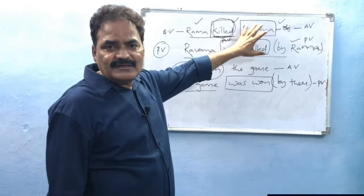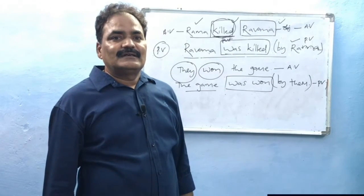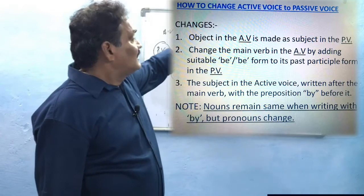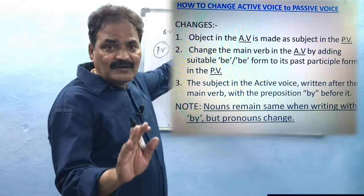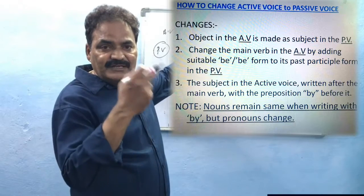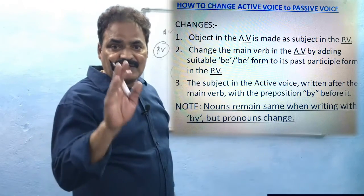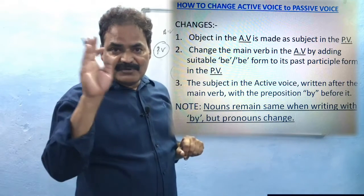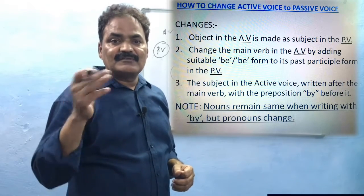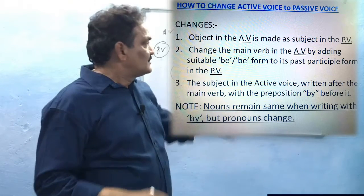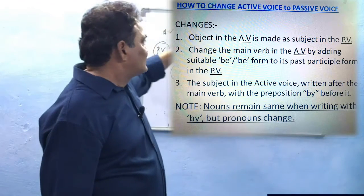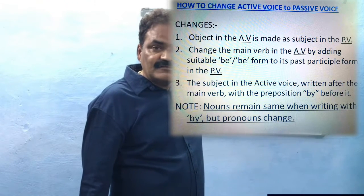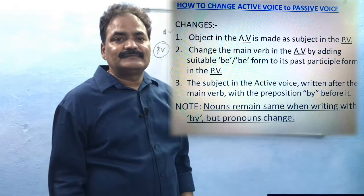In whatever may be the other parts in the sentence, we don't worry — these three are important. First: the object in active voice will be the subject in passive voice. Second: the main verb changes — based on its form, suppose it is in present form, take the be-form in present; in perfect form, take the perfect be-form — plus the past participle of the main verb. Third: the subject in active voice becomes the agent in passive voice, placed after the main verb with 'by' before it.